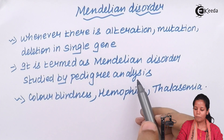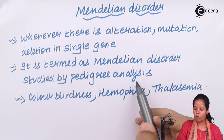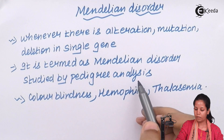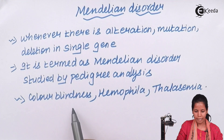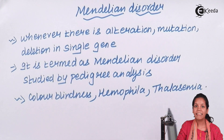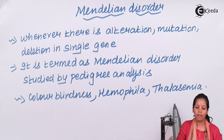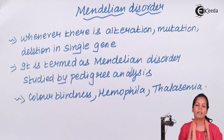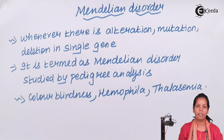Some examples of Mendelian disorders are color blindness, hemophilia, thalassemia, phenylketonuria, and cystic fibrosis, among a few others.